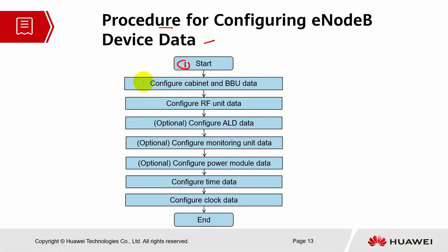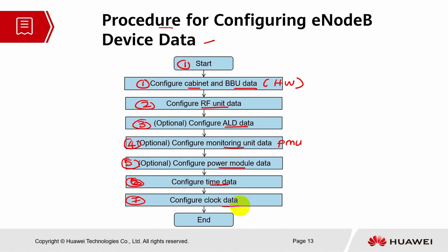When we start, we have to configure the cabinet and the BBU data — this is more related to the hardware. Number two, we have to configure the RF unit data. Number three is optional, related to antenna line device; if you have the device you configure it, otherwise you can ignore this part. Four is also optional, related to the monitoring unit data, depending on whether you are using the PMU device. Number five is also optional, related to power module data. Number six, we have to configure the time data — this is compulsory mandatory information. And number seven, we have to configure the clock information: what kind of external clock system we are going to use for this base station. So basically we configure the external clock information under the clock data, under the device data section. These are basically the flowchart steps for the configuration of device data.